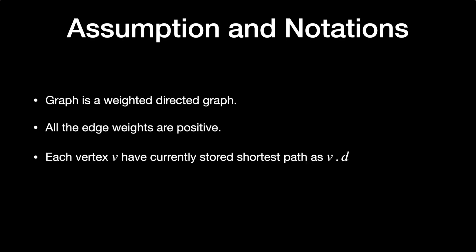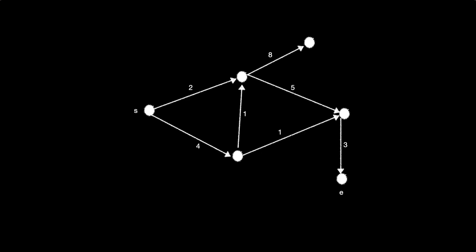Each vertex will have a currently stored shortest path, denoted as v.d — at every node in the graph, it stores the shortest path computed up until that point. The predecessor from which the shortest path is coming is stored as v.pi.